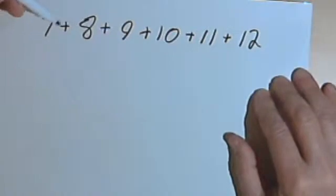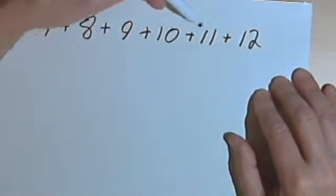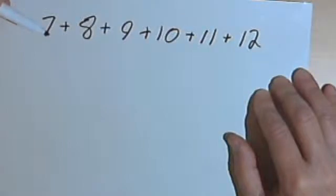So here's the first problem. Here I've got a sequence 7, 8, 9, 10, 11, and 12. And of course I want to add them all up.